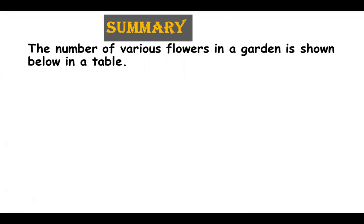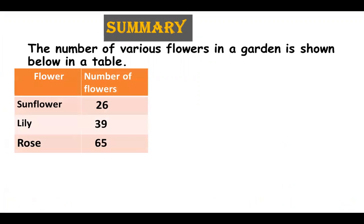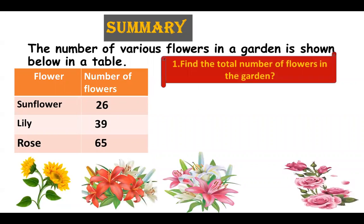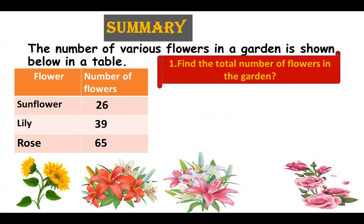Let's summarize today's lesson. The number of various flowers in a garden is shown below in a table. At one side you can see the flowers and on the other side you can see the number of flowers. So you need to find the total number of flowers in the garden. So 26 plus 39 plus 65 equals 130 flowers.